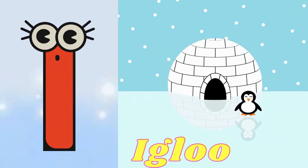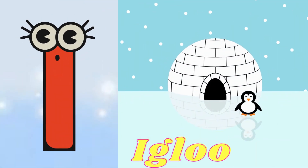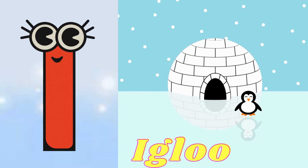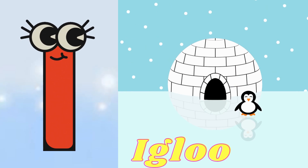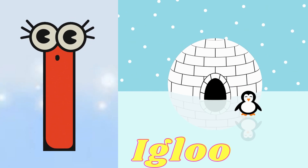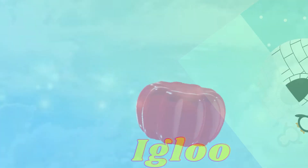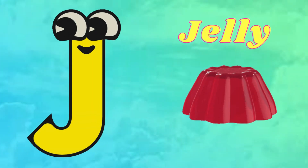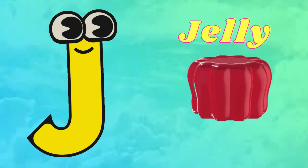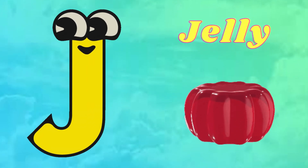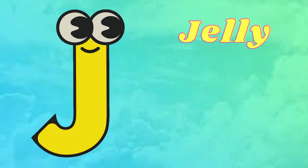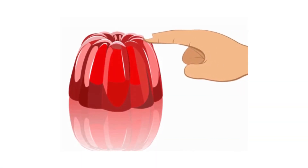I is for Igloo. Igloo, E, Igloo, I, Igloo. J is for Jelly. G, Jelly, G, Jelly, J, Jelly.